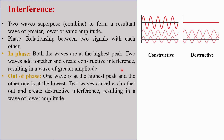When one wave is at its highest peak and the other one is at the lowest, we can say they are out of phase. In that case, two waves cancel each other out and create destructive interference, resulting in a wave of lower amplitude. Here we can see this wave is at its highest peak and this wave has the lowest peak. If we add them together, they will cancel each other out and the resulting wave will have a much lower amplitude.